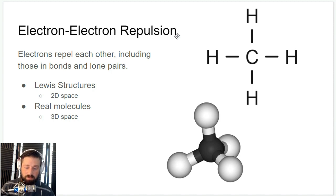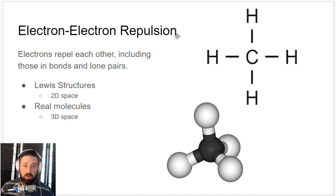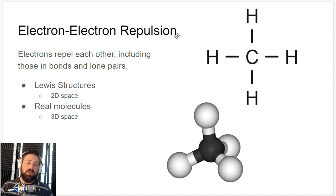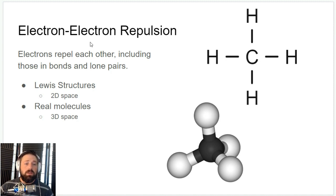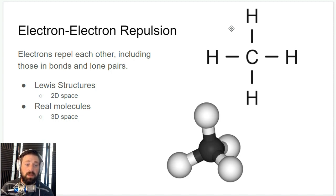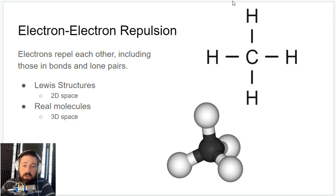If two things are interacting, you say one thing, the other thing, and then how they're interacting — so electron-electron repulsion. There's also dipole-dipole interactions or dipole-ionic interactions; it's always one thing, one thing, how they're reacting. For electron-electron repulsions, remember that electrons are trying to push each other apart as far as possible, and we can use that to see the shape of molecules.